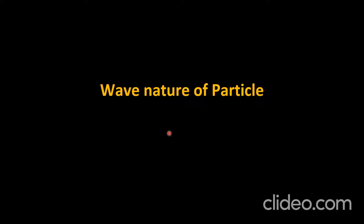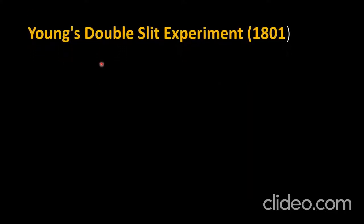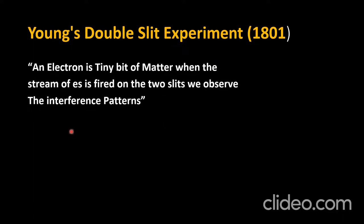Now we will discuss the wave nature of particles — that is, how particles behave as a wave. This experiment, performed in 1801, was done to confirm the wave nature of particles. An electron is a tiny particle. When a stream of electrons is fired at two slits, we observe an interference pattern.